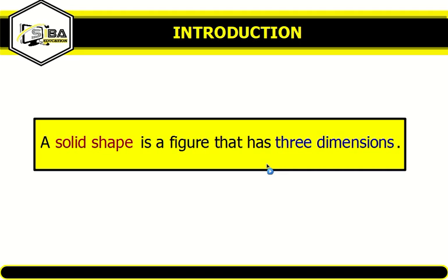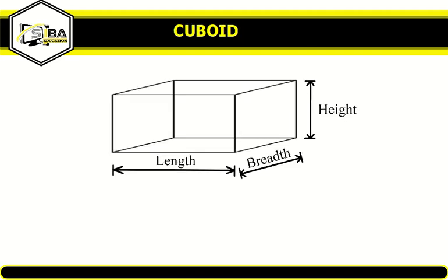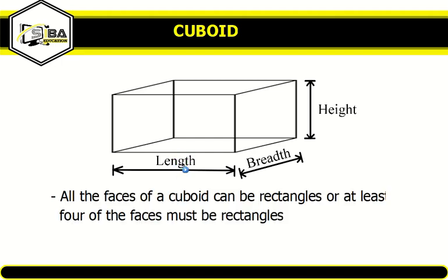Then we will cite examples of objects around us that are these shapes. Let's start with the cuboid. Now a cuboid is any solid shape that may have all of its faces being rectangles, or at least four of the faces must be rectangles. We have to know that for a cuboid all the sides are not equal.